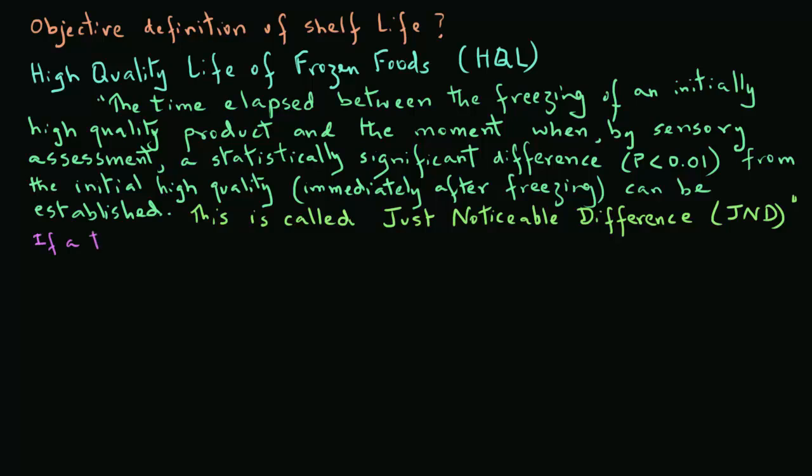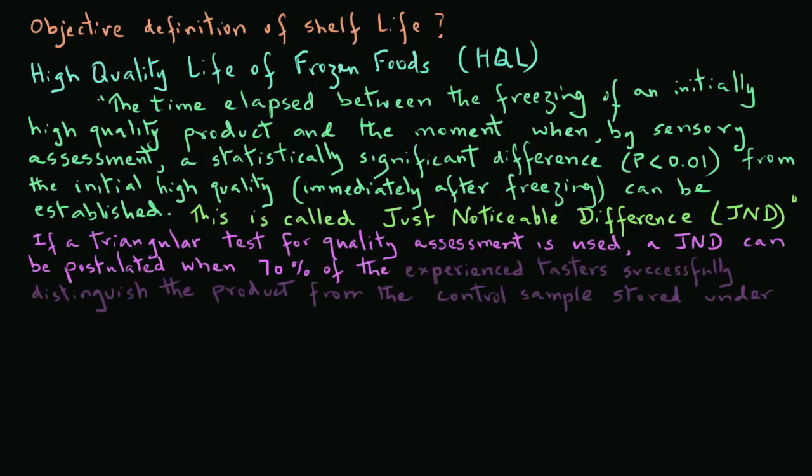In other words, if you have a triangular test for quality assessment, then a just noticeable difference can be postulated when 70% of the experienced tasters successfully distinguish the product from the control sample.